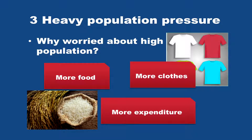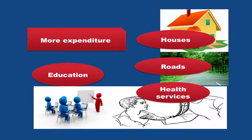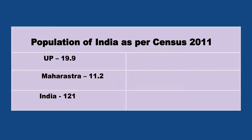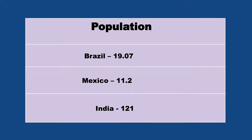Why are we worried about high population? If there is more population, we require more food, more clothes, and we need more income because our expenditure increases very highly. We need to construct more houses, more roads, more schools, and more hospitals for providing health services. According to census 2011, Uttar Pradesh's population has grown by 19 percent, Maharashtra by 11.2 percent, and the total population of India is 1.21 billion. Compared to Brazil at 190.7 million and Mexico at 112 million, India's population is much larger.